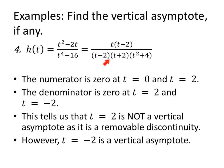Now I know the numerator is zero at 0 and at 2. The denominator is zero at 2 and at -2. This tells us that t = 2 is not a vertical asymptote. This is a removable discontinuity. However, t = -2 is a vertical asymptote. Again, vertical asymptote equation of a line. Our input variable, an equal sign, and the value on the right. You must have an equation of a line for vertical asymptotes.